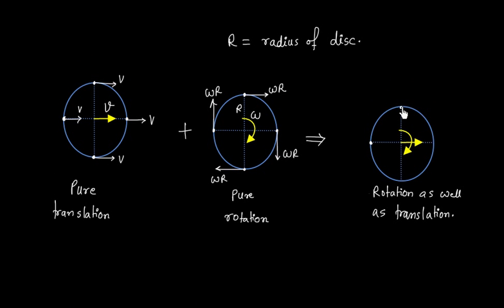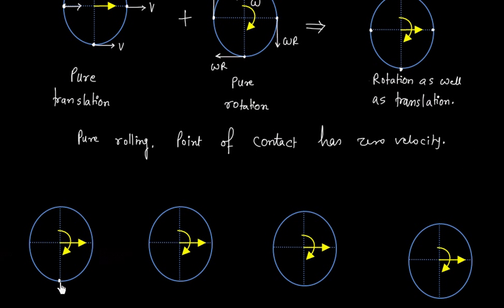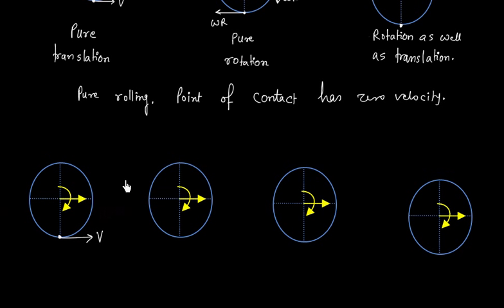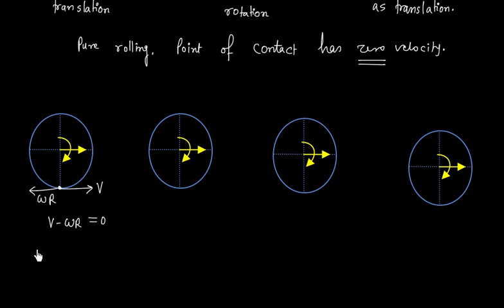Now we will consider four points on the disk in pure rolling. In pure rolling, the point of contact has zero velocity. At the contact point, translation gives velocity v forward, and rotation gives velocity omega·r backward, so the resultant is v minus omega·r. Setting this equal to zero gives the pure rolling condition: v equals omega·r.